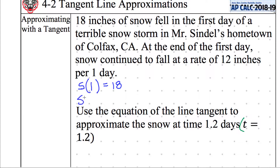Use calculus. S prime of 1 is equal to 12. The derivative — the rate — is 12 at time equals 1, at the end of the first day. At the end of the first day, that's open to interpretation — maybe it's 1, or maybe something like 0.999. So how do we turn this into an equation?